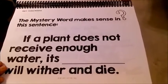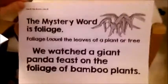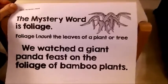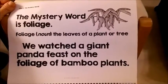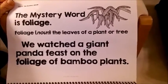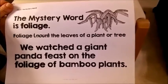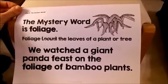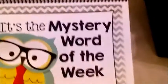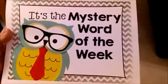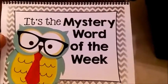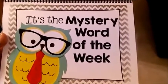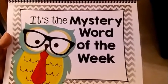The fifth day, Friday, they love this because then they get the reveal. The word was foliage — foliage, the leaves of a plant or tree. We watched a giant panda feast on the foliage of bamboo plants. And within those couple of minutes, we have covered synonyms, antonyms, parts of speech, and context clues.